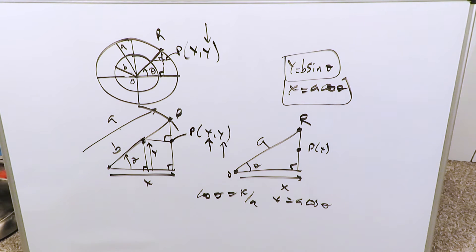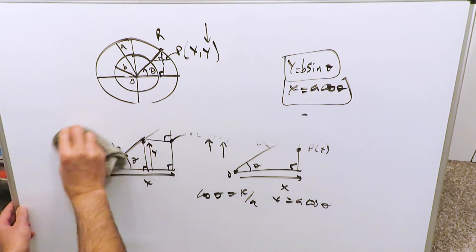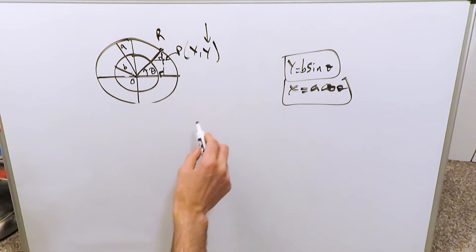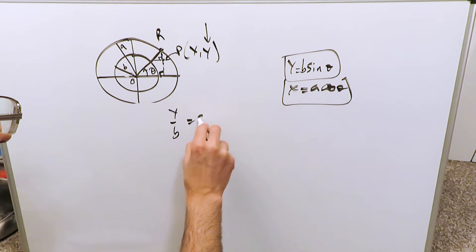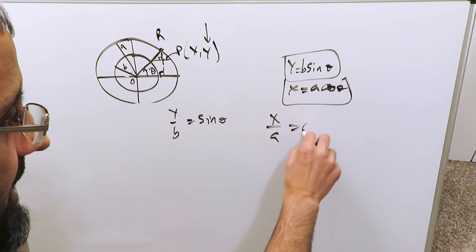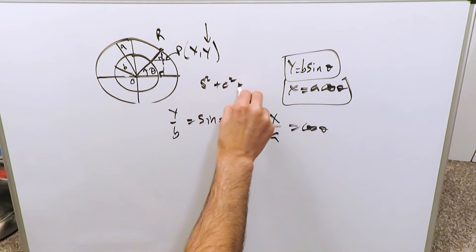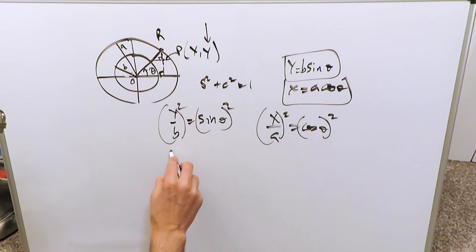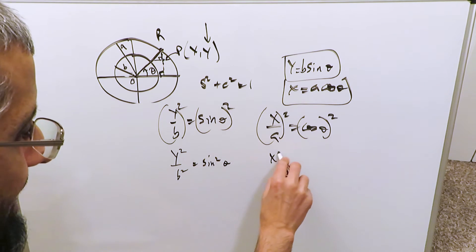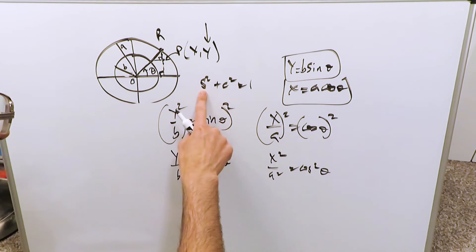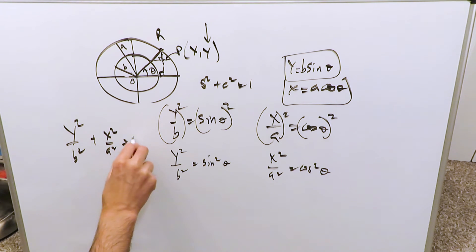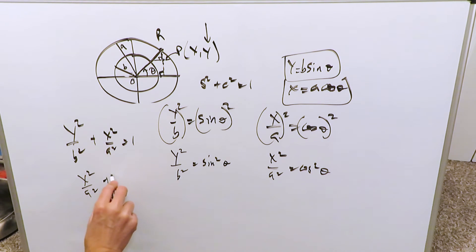Now we have to eliminate the parameter and determine what the curve is that point p traces. We've made it clear it's not a circle — it's something other than a circle. Push the constants to the other side: y over b equals sin(θ), and x over a equals cos(θ). Using the identity sin²θ + cos²θ = 1, squaring both sides gives us y²/b² = sin²θ and x²/a² = cos²θ. Adding them together: y²/b² + x²/a² = 1.